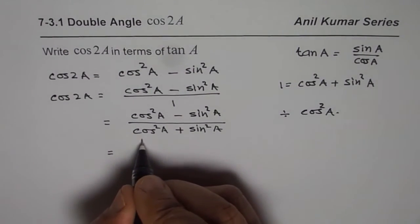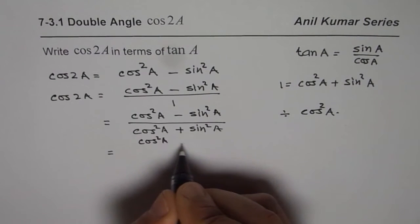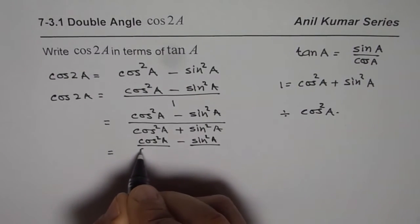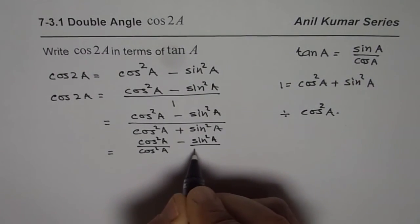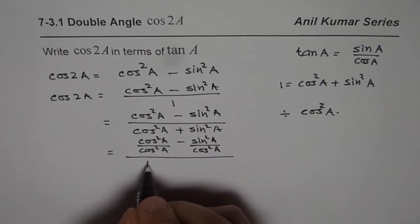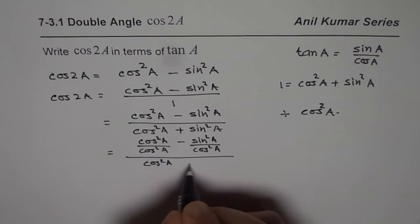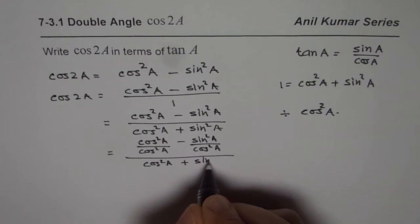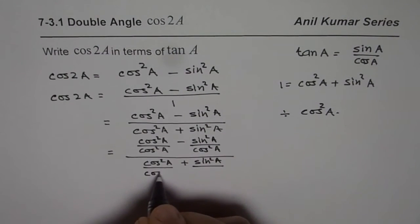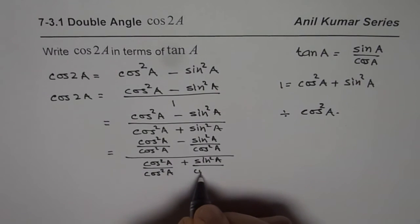Then what do we get? We get cos²A minus sin²A, dividing both by cos²A. Do you see that? In the denominator, we have cos²A plus sin²A, and we are dividing both by cos²A. Correct?